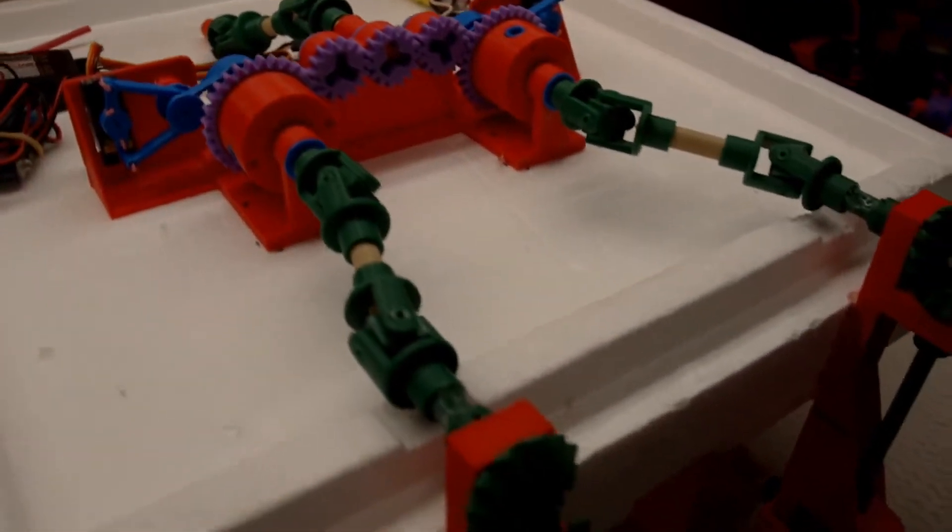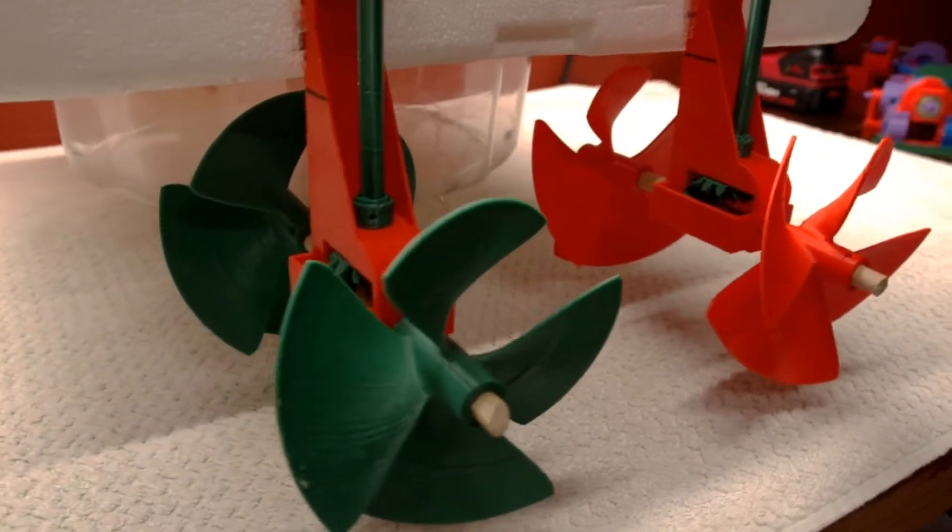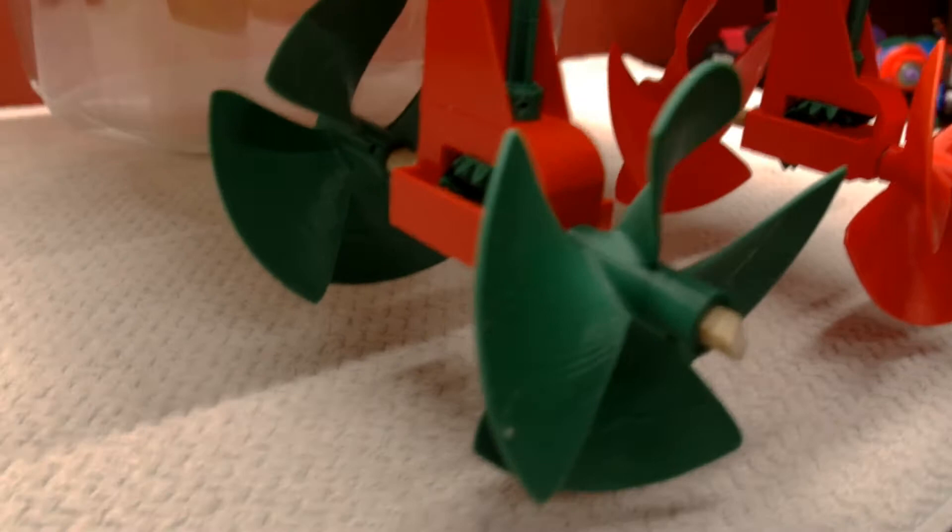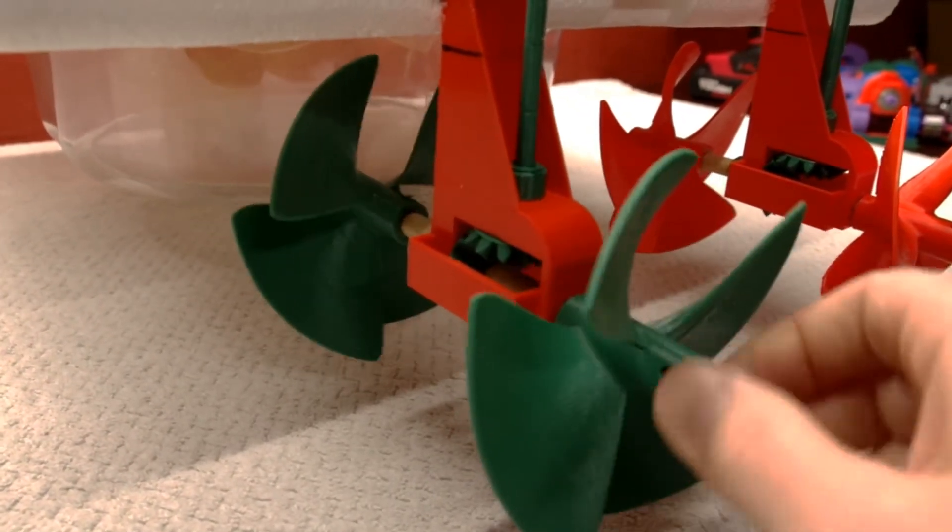When the clamps aren't engaged, the static load on the propeller sends all the torque to the clamp side, which causes the props to idle regardless of motor speed. This allows you to effectively turn the props on and off at the push of a button.